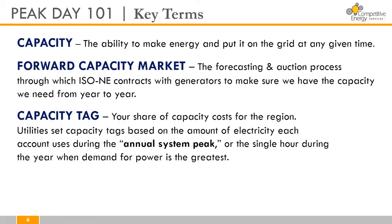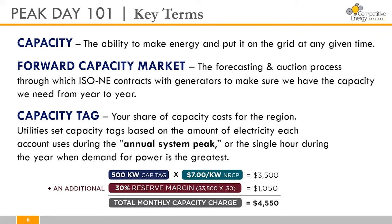So how are your capacity charges determined? You're going to pay for your share of capacity costs based off of the capacity tag for each of your utility accounts. Utilities set the capacity tags based off of the amount of electricity that each account is using during the annual system peak — the single hour in the year when the demand for power is at its greatest. There is a calculation you can use to determine your capacity costs, but if you're interested in learning more we would encourage you to reach out to our team.